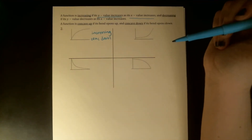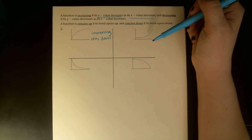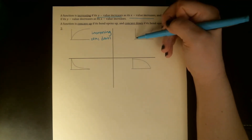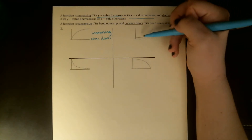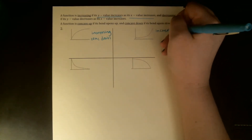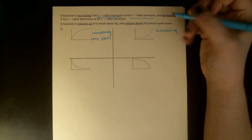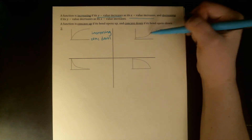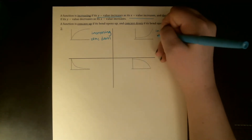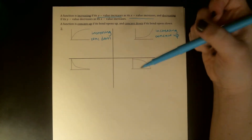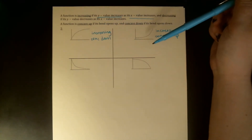This next one — again, as we're moving from left to right, our y values are getting bigger and bigger, so this function is also increasing. This time our bend is opening upward, so it looks like it's on some part of a smile. That's concave up. So we have increasing concave down and increasing concave up.